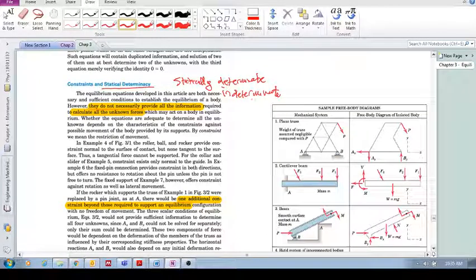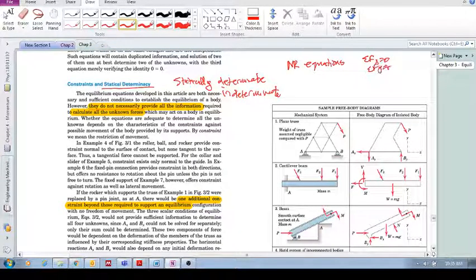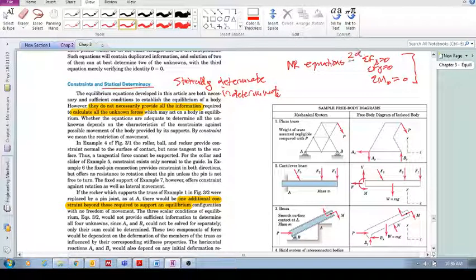Statically determinate is basically what we've been looking at so far. What this means is the number of equations that we have—and what are we talking about? We're talking about sum of the forces in the x equals zero, sum of the forces in the y equals zero in the two-dimensional system, and sum of the moments about O equals zero. Those are our equations for a 2D system in equilibrium.